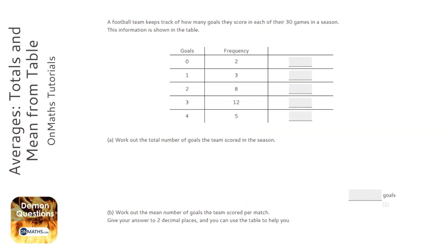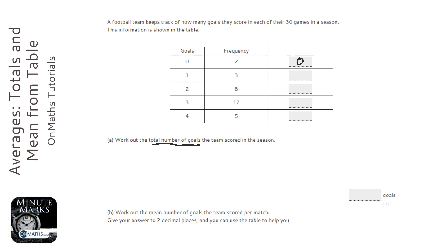This is a football team's 30 games and how many goals they scored in them. It asks us for the total number of goals the team scored in the season. In two of the matches they scored zero goals, so the first box has no goals at all. Three of the matches they scored one goal, so that's three goals in those three matches.